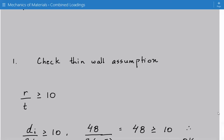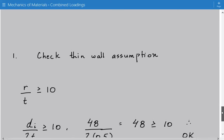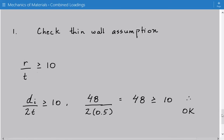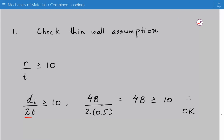The first thing we need to do is check the thin wall assumption — meaning we need to check if this can be classified as a thin wall pressure vessel. The general criteria is the inner radius divided by the thickness. If it's greater than or equal to 10, then this falls under the thin wall assumption. So R over T equals the inner diameter divided by 2 times T, and must be greater than or equal to 10.